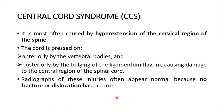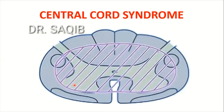In central cord syndrome, CCS, it is most often caused by hyperextension of the cervical region of the spine. The cord is pressed anteriorly by the vertebral bodies and posteriorly by the bulging of the ligamentum flavum, causing damage to the central region of the spinal cord. Radiographs of these injuries often appear normal because no fracture or dislocation has occurred. As you can see in the picture, the damage is occurring in the central region of the cord.